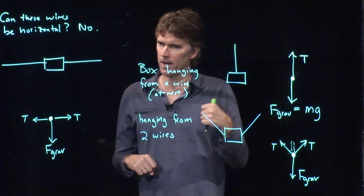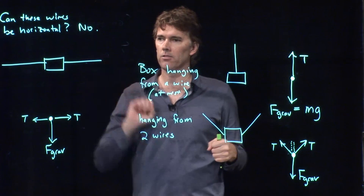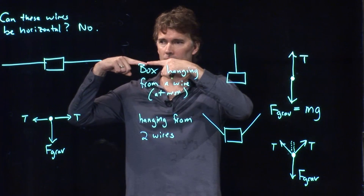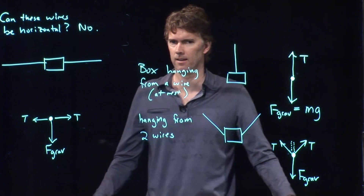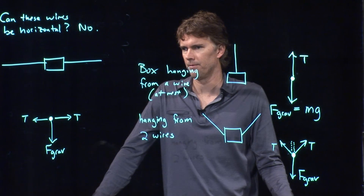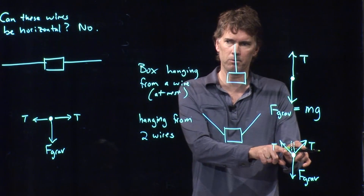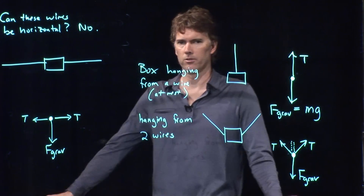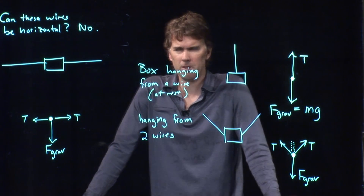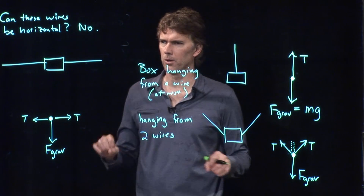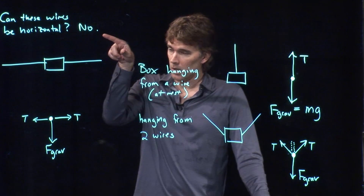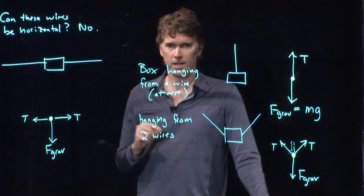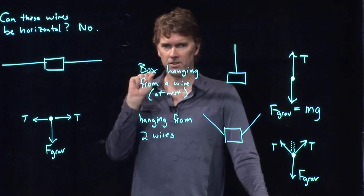Even if I take a giant steel cable and crank on it with a winch, and then hang something like a textbook on it, it sags a little bit — not a lot, but a little bit. It cannot stay perfectly horizontal. You have to have some angle associated with it, which gives you a slight vertical component of the force. You think about those giant cables holding up the Golden Gate Bridge — if you stand at one end and look along the cable, it sags. It certainly sags. It always sags a little bit.